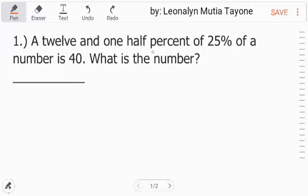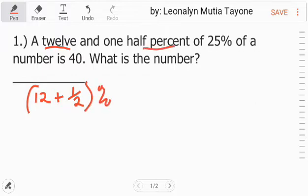Number one: A 12 and one-half percent of 25 percent of a number is 40. What is the number? A 12 and one-half - that's one-half percent. In other words, that is 12 and one-half percent.